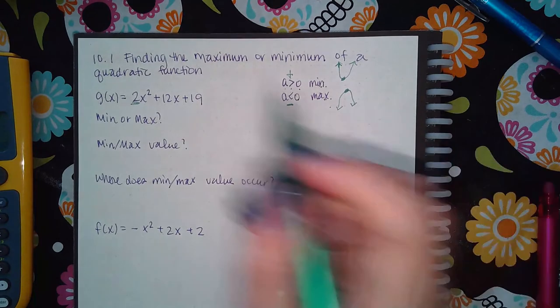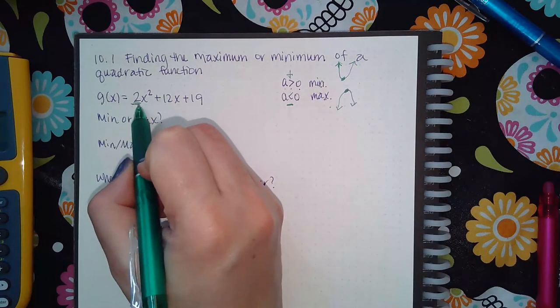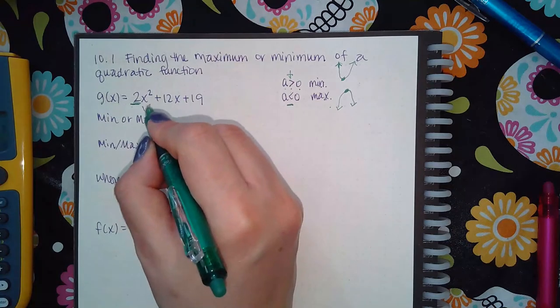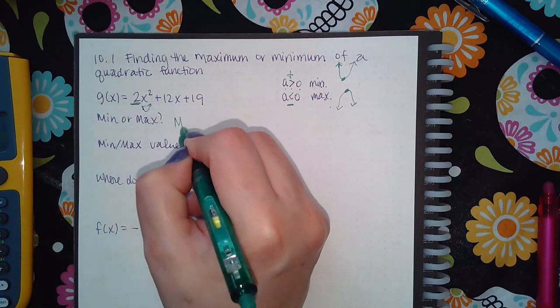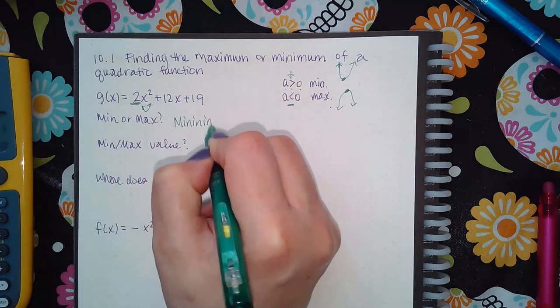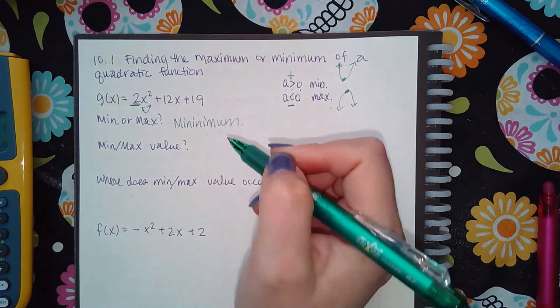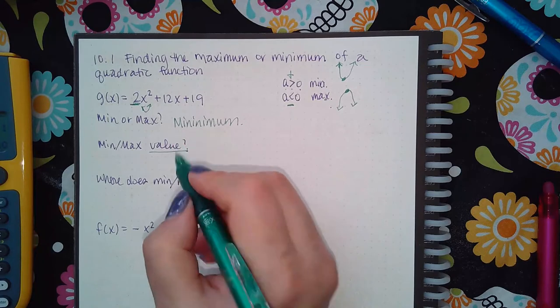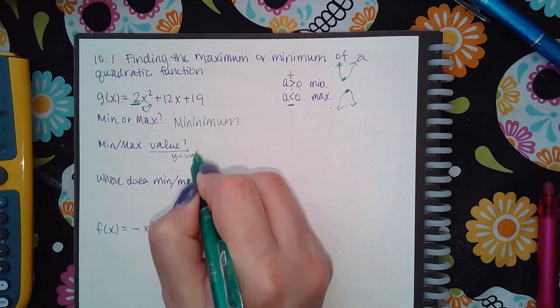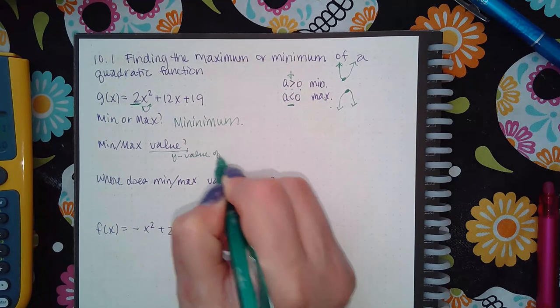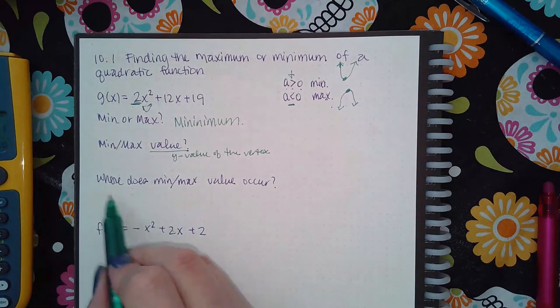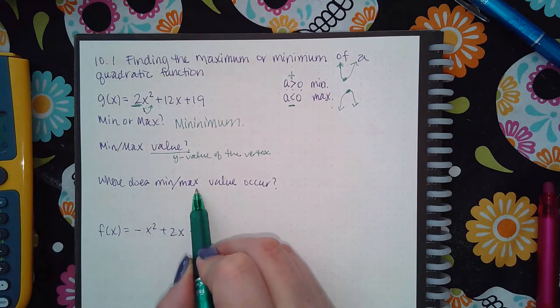In this particular case my a is a positive two, which means mine will be opening upward, which tells me I have a minimum. Then it wants to know what that minimum or maximum value is. That is the y value of the vertex.